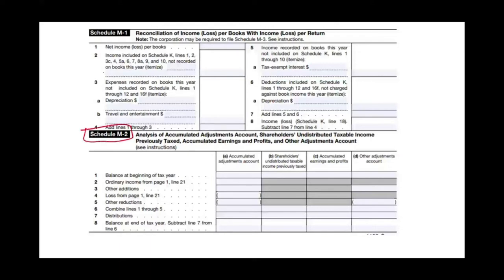These accounts appear on Schedule M2 of the tax return. Schedule M1 is a reconciliation of income or loss per books with the return — we'll talk about that later. The three accounts on Schedule M2 that we need to understand are: AAA — Accumulated Adjustment Account — then AEP, and then OAA. Once we understand those accounts, it's easier to see how they apply.